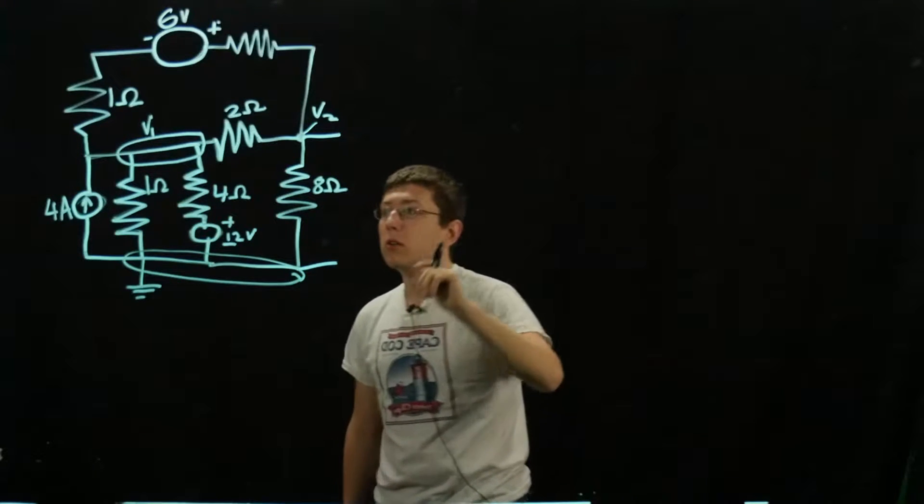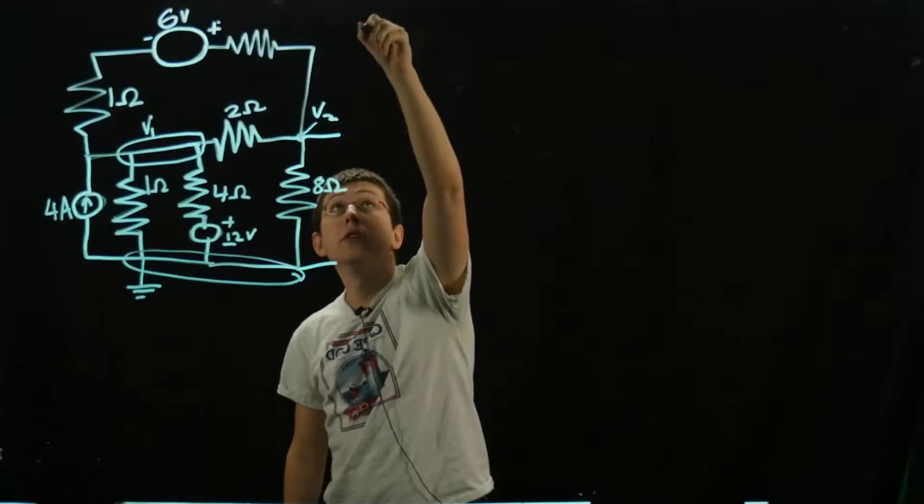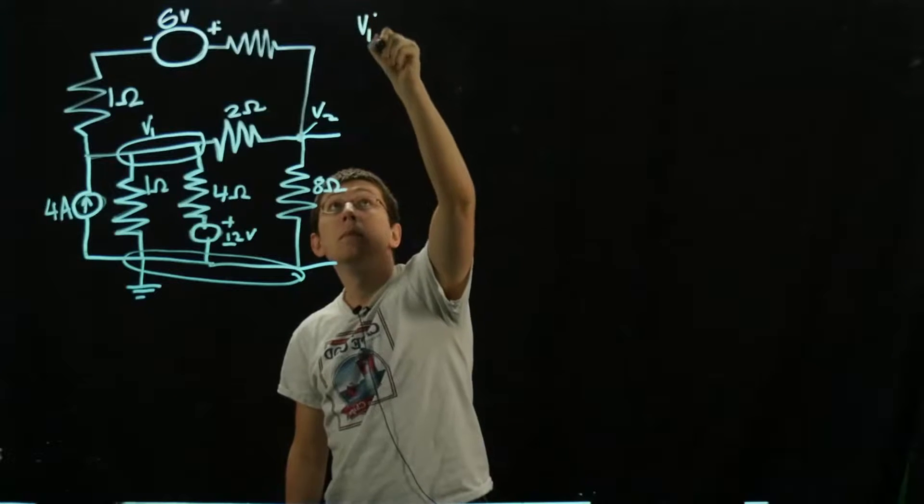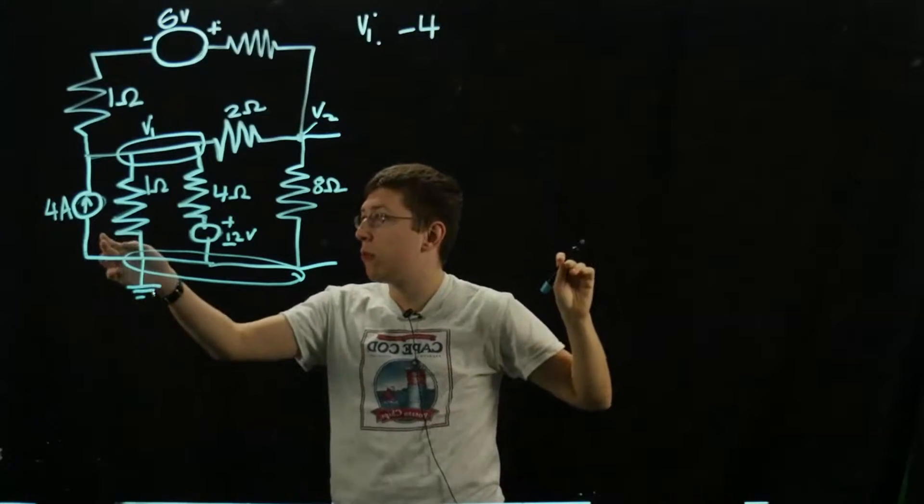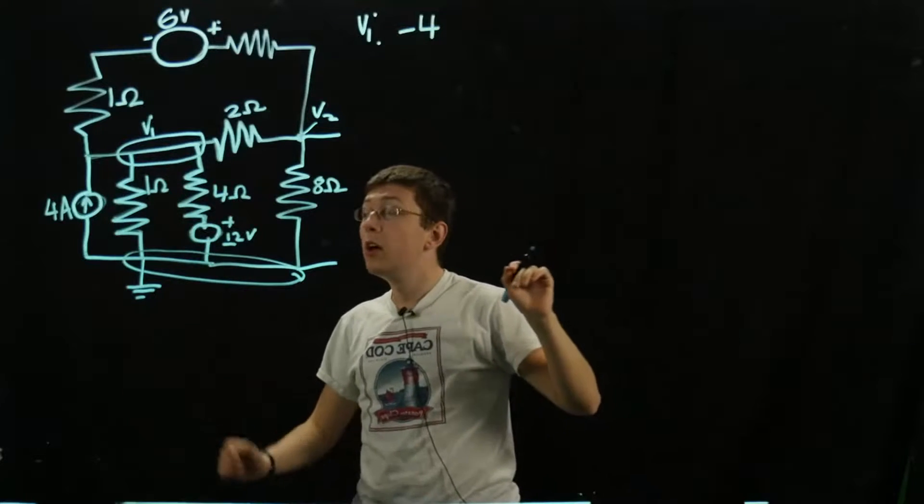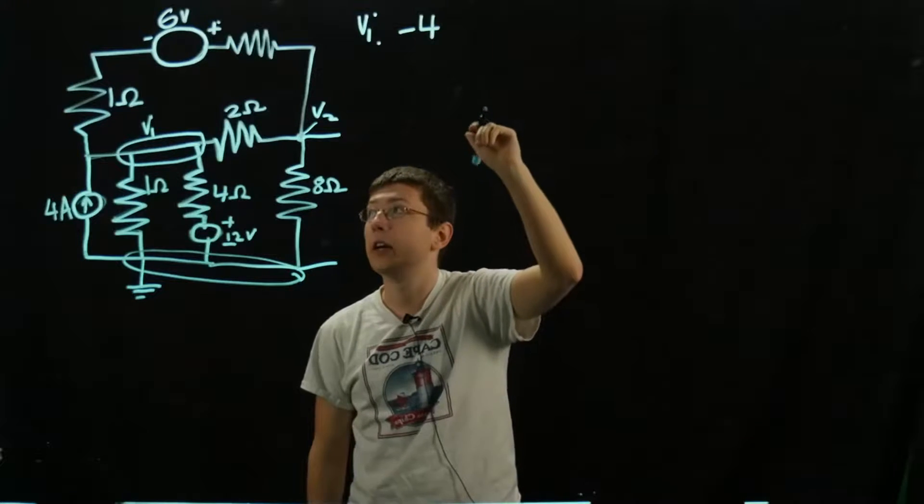I'll start with V1. For the equation for V1, we have negative 4 because we have 4 amps entering V1. The convention for node voltage is any current entering is negative.